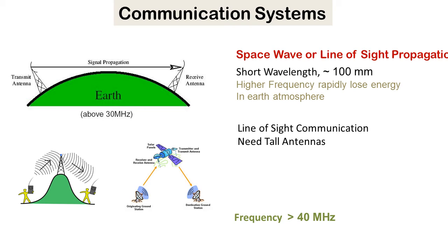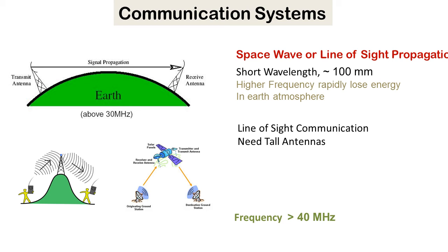Space wave propagation is also known as line-of-sight propagation. The antennas must be in line of sight to transmit and receive signals — they should not be hidden by Earth's curvature or obstacles like mountains. These require tall antennas and are used for satellite communication, where the satellite has a direct line of sight with ground antennas. Space waves operate at frequencies typically above 40 megahertz.